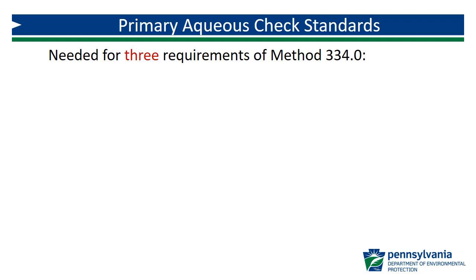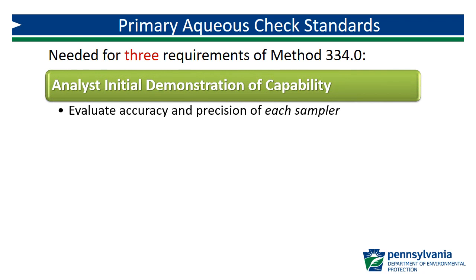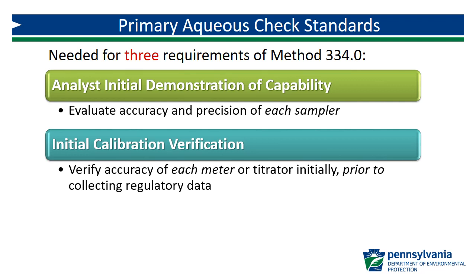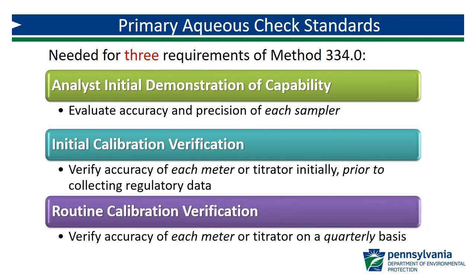Primary aqueous standards are needed for three different requirements of Method 334.0. First is the analyst initial demonstration of capability, used to evaluate the accuracy and precision of each individual sampler analyzing grab samples for compliance or comparative grab sampling. Second is the initial calibration verification for grab sample equipment, which verifies the accuracy of each meter or titrator. Third is routine calibration verification for ongoing verification of meter or titrator accuracy. Each of these will be covered in much greater detail in subsequent videos.